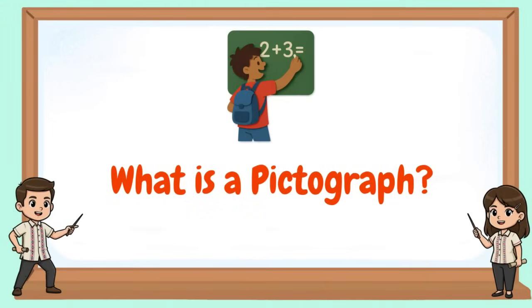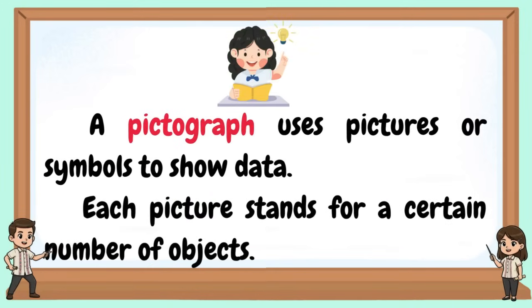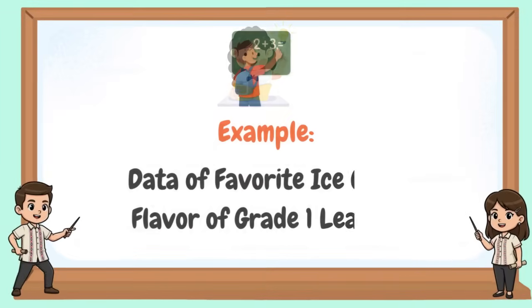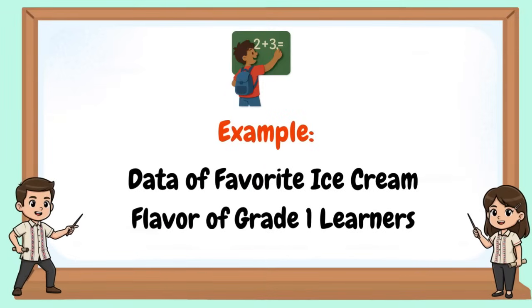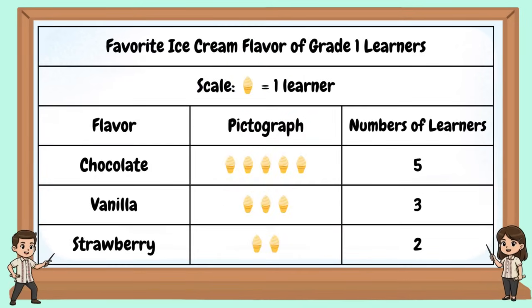What is a pictograph? A pictograph uses pictures or symbols to show data. Each picture stands for a certain number of objects. Example: data of favorite ice cream flavor of Grade 1 learners. One ice cream equals one learner. Five learners like chocolate flavor, three like vanilla flavor, and two like strawberry flavor.